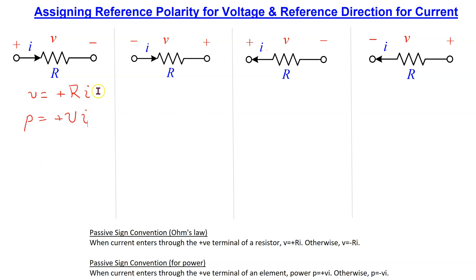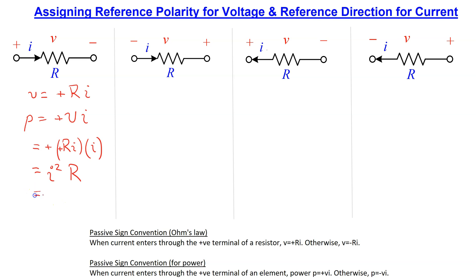Substituting the value of V from Ohm's law, we get V equals plus R times I, multiplied by I, which equals I squared R. Substituting the value of I from Ohm's law, this can also be shown to equal plus V over R, squared times R, which equals V squared over R.